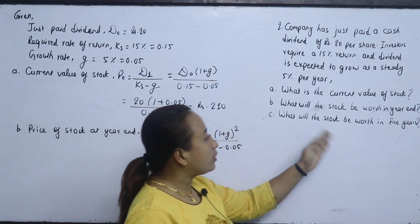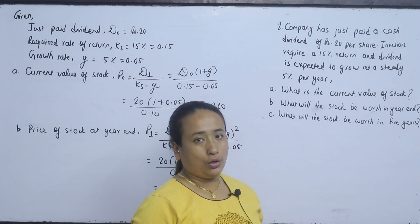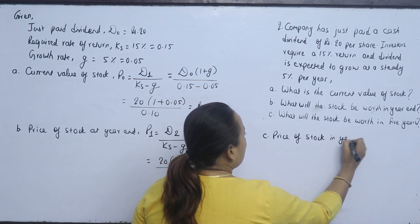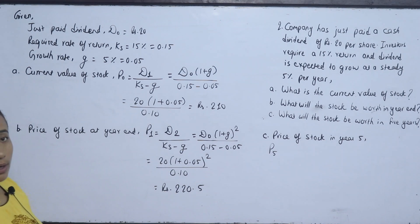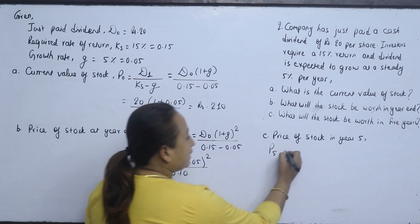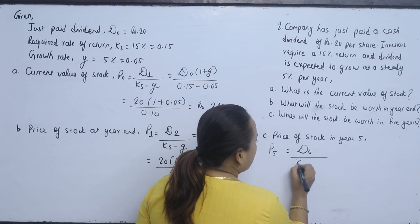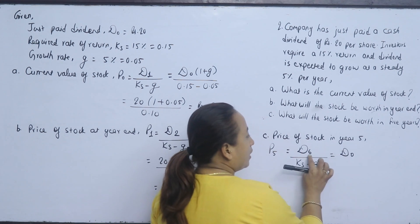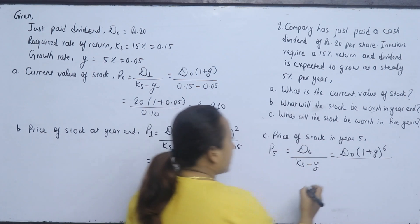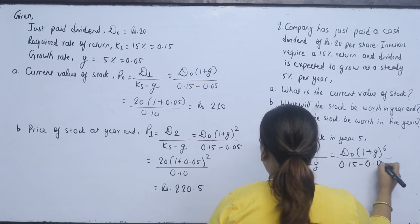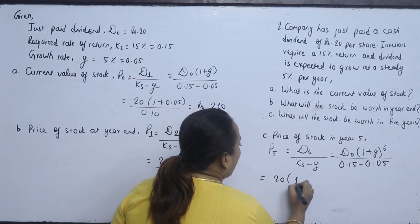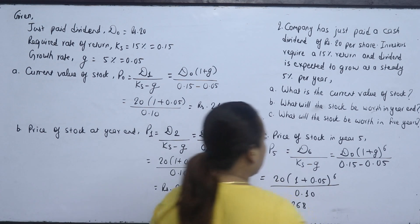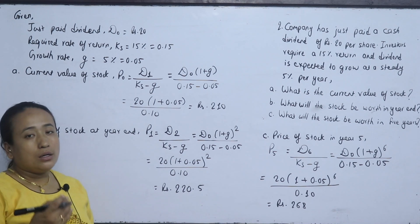What will the stock be worth in 5 years? This is P5. Using the pattern P0 = D1, P1 = D2, P5 = D6/(KS - G). D6 = D0 × (1 + G)^6. So P5 = [20 × (1.05)^6] / (0.15 - 0.05) = 20 × 1.3401 / 0.10 = Rs. 268.0 (approximately).